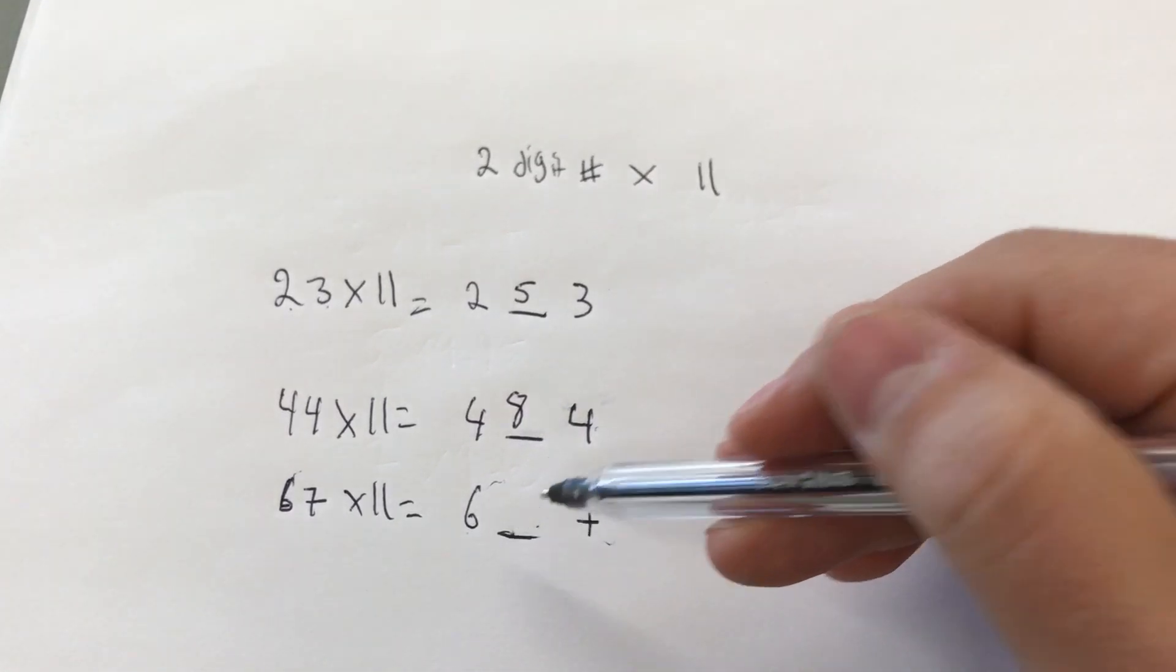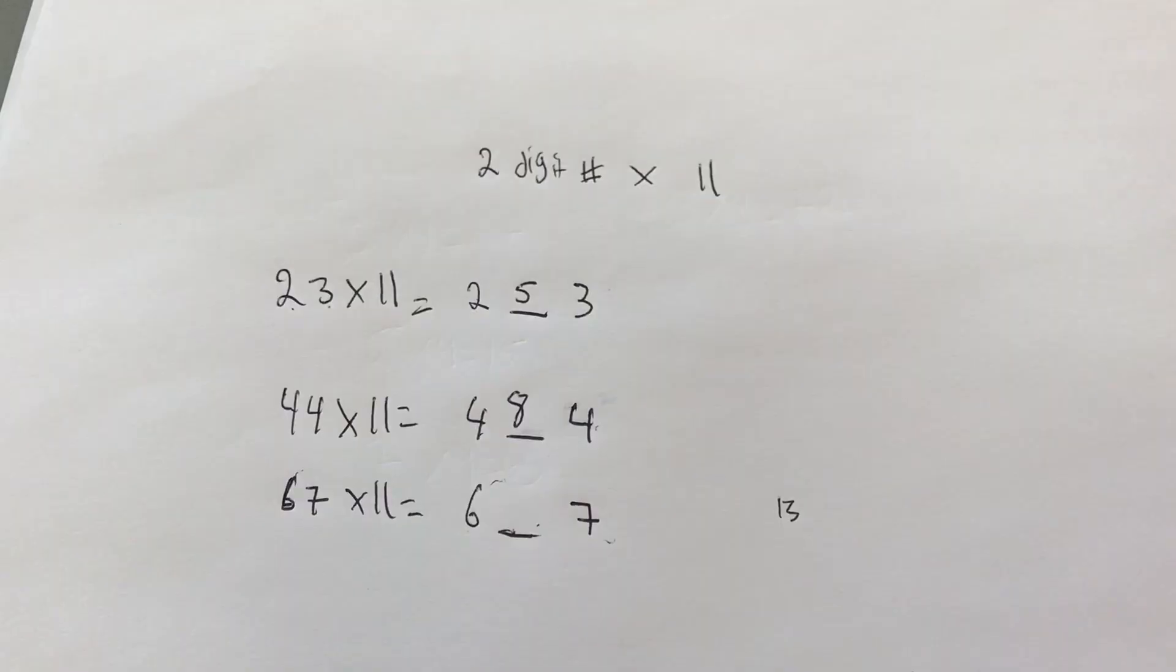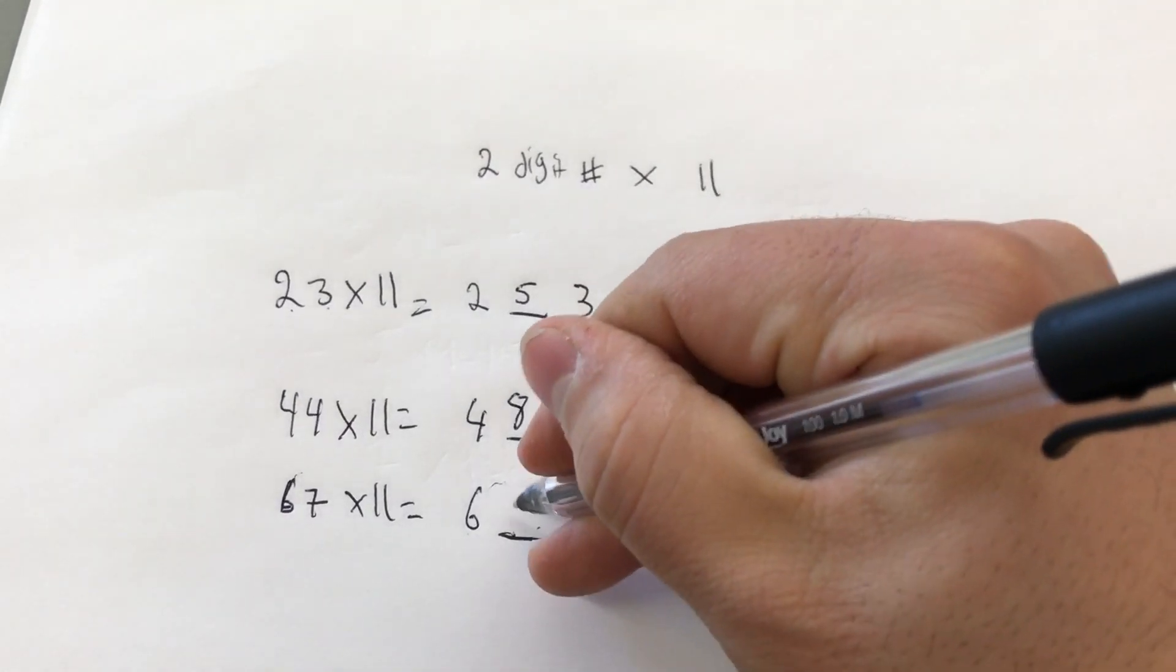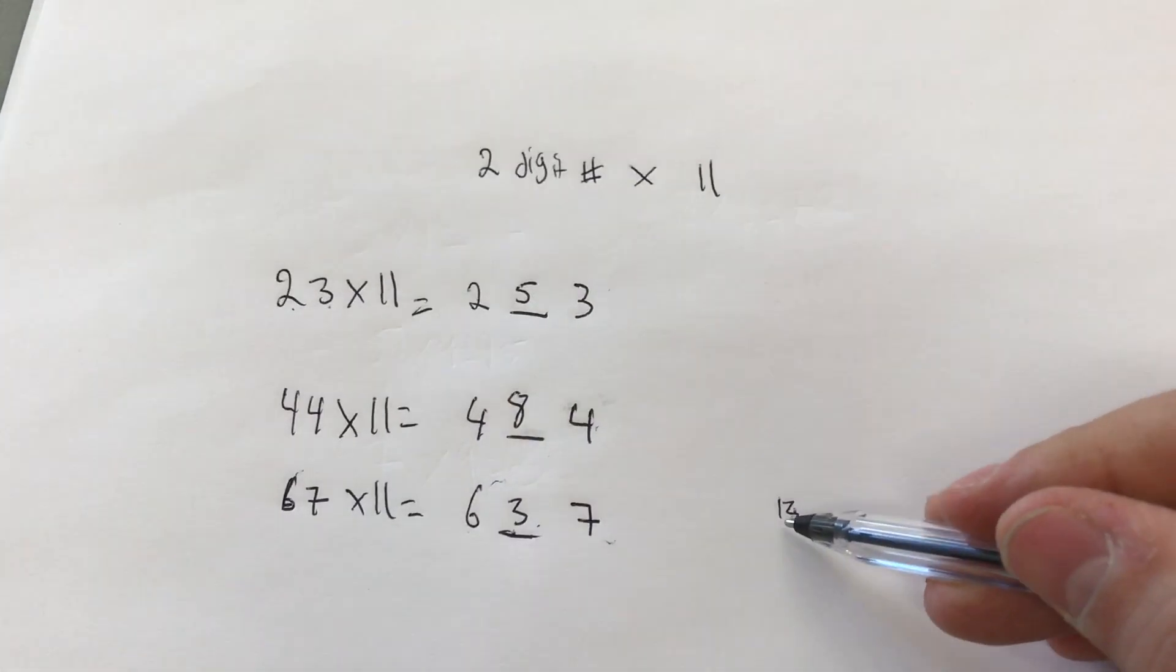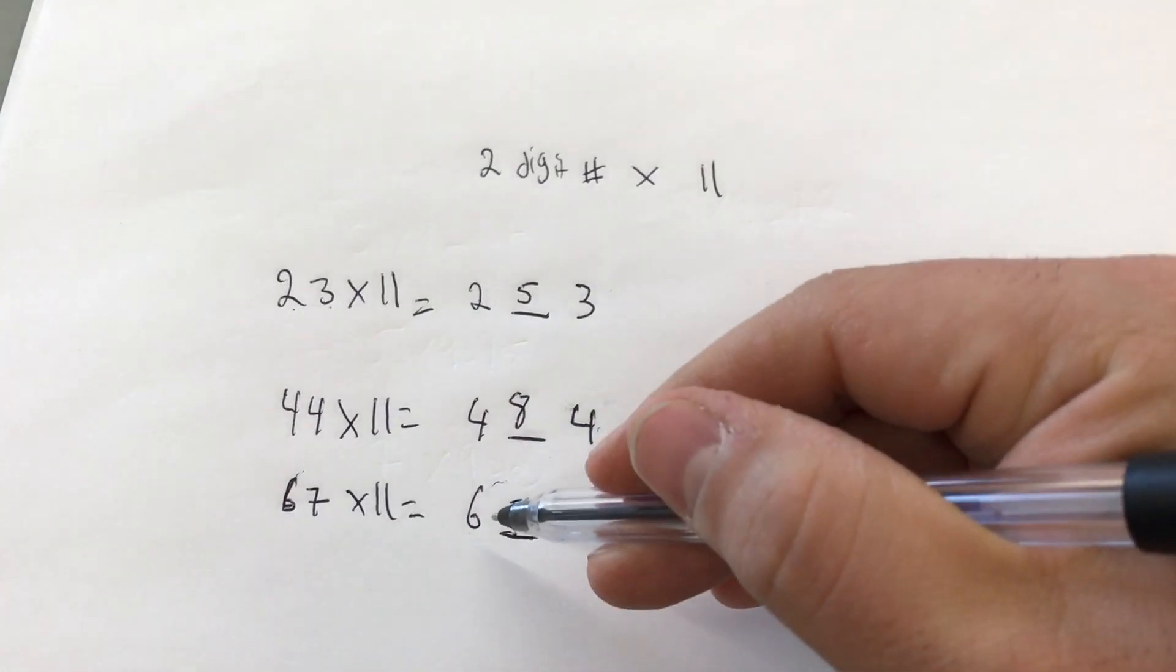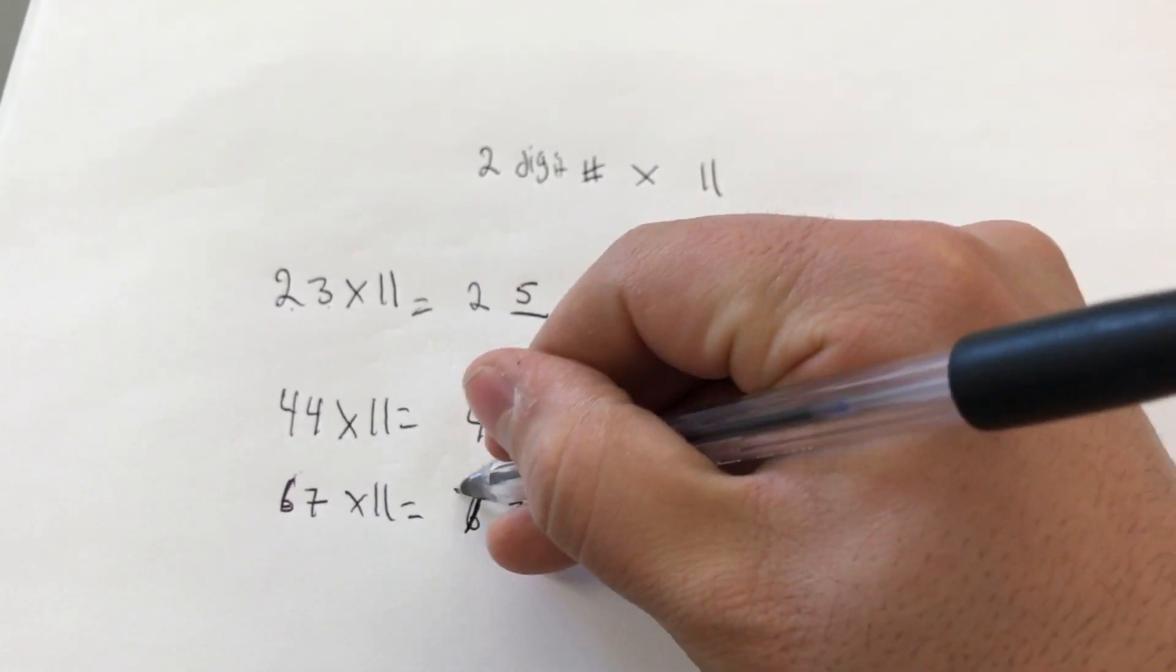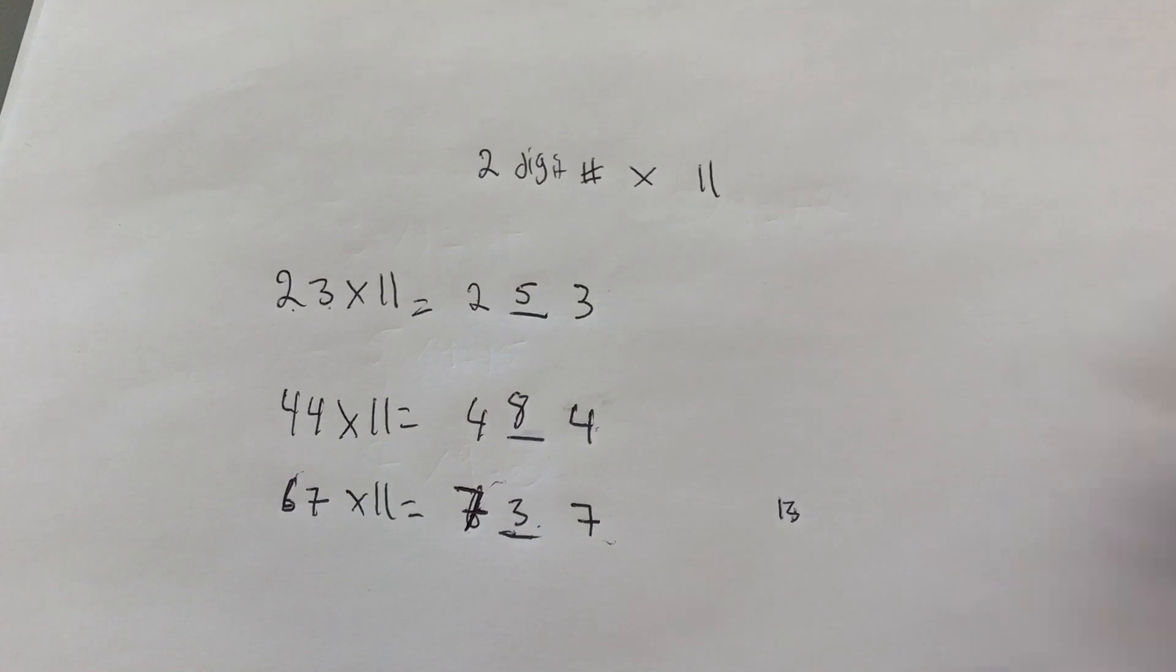So with the 13, and I'll put it over here. With the 13, what we do is we take the 3 and we put it there. So we take the second digit and we put it there. And we take this 1 and we add it to the 6. So the 6 plus the 1 becomes a 7. 737.